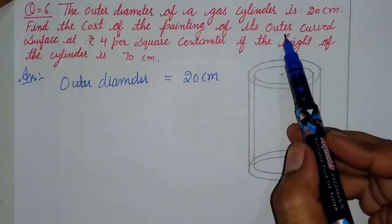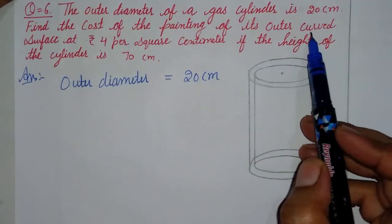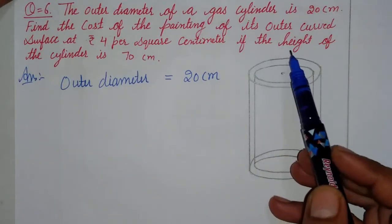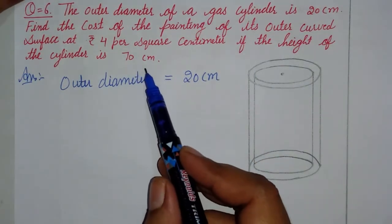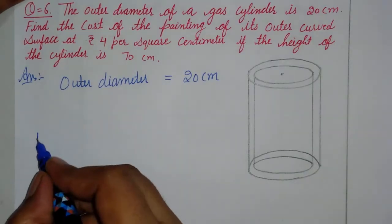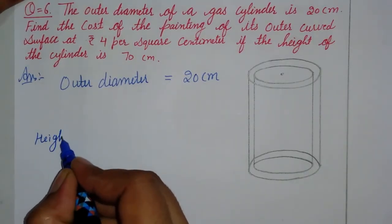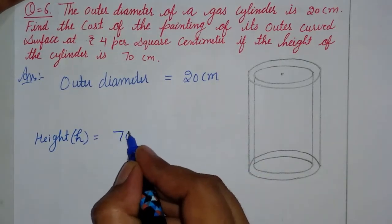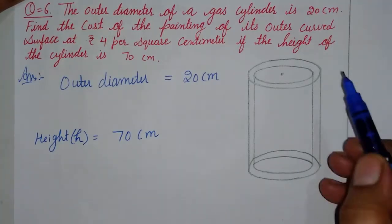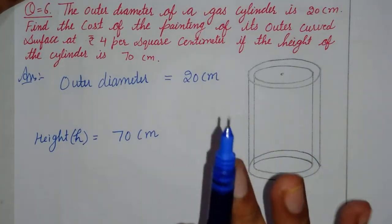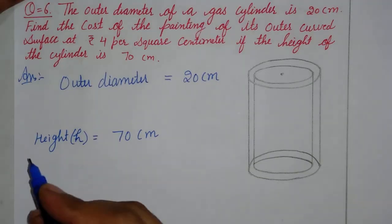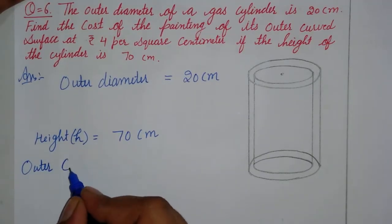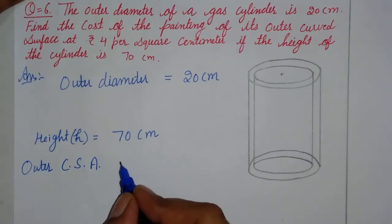We have to find the outer curved surface area at rupee 4 per square centimeter, if the height of the cylinder is 70 centimeters. So I have given that the height is 70 centimeters. Now you can see we have to find the outer curved surface area of the cylinder.